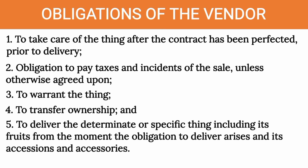Third is to warrant the thing, but we will not discuss warranties here — they will be covered by a separate video. We are not going to expound on the obligation to pay taxes and incidentals because as a general rule, the seller will be the one liable unless there is a stipulation to the contrary. For this video, we will discuss the obligation to take care of the thing prior to delivery but after perfection of the contract, and the obligation to transfer ownership. Part Two will cover the fifth obligation: to deliver the determinate or specific thing, including its fruits, accessions, and accessories from the moment the obligation to deliver arises.